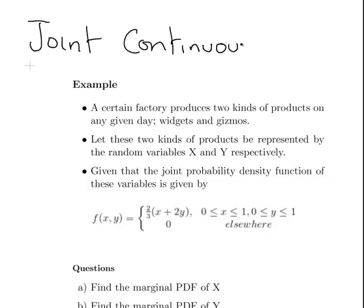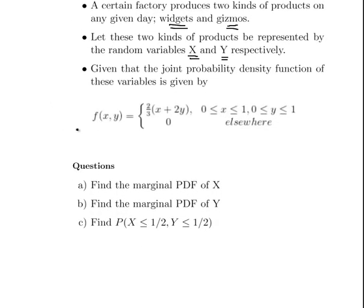A certain factory produces two kinds of products on any given day: widgets and gizmos. Let these two kinds of products be represented by the random variables X and Y, so X for widgets and Y for gizmos. Given that the joint probability density function of these variables is given by such and such, what we are asked to do is answer these questions. So that's the joint probability distribution.